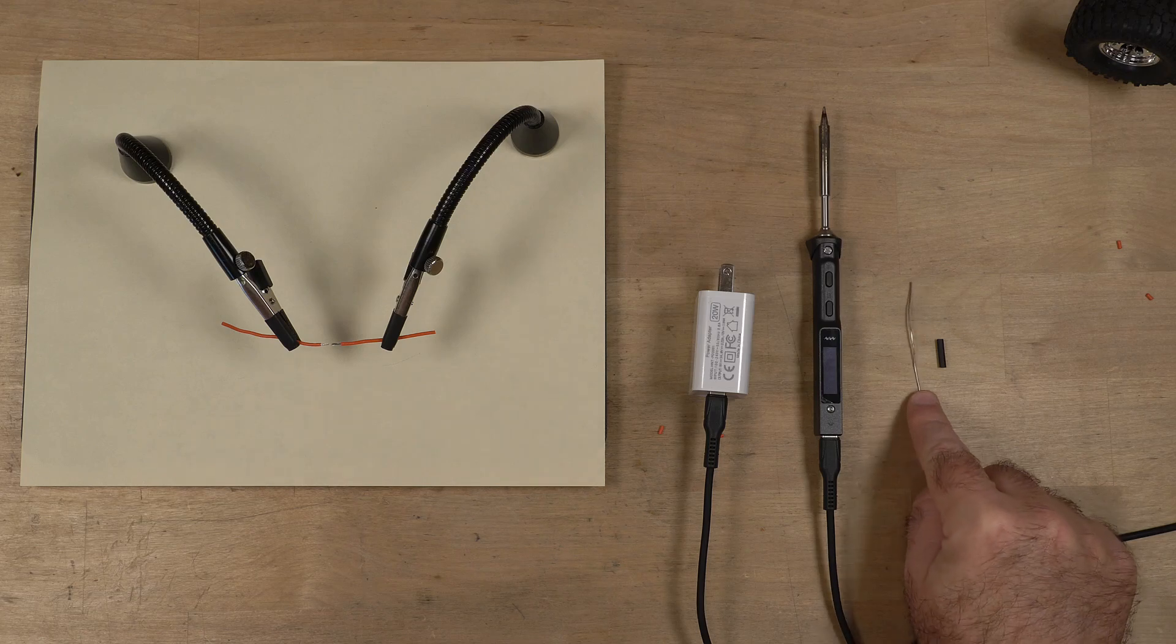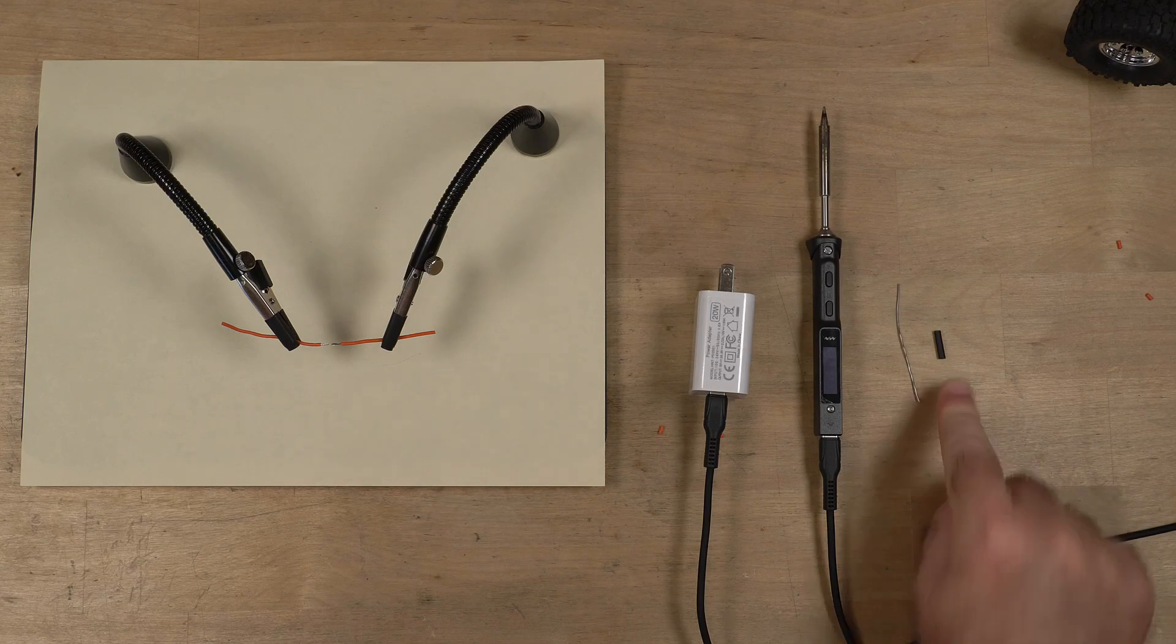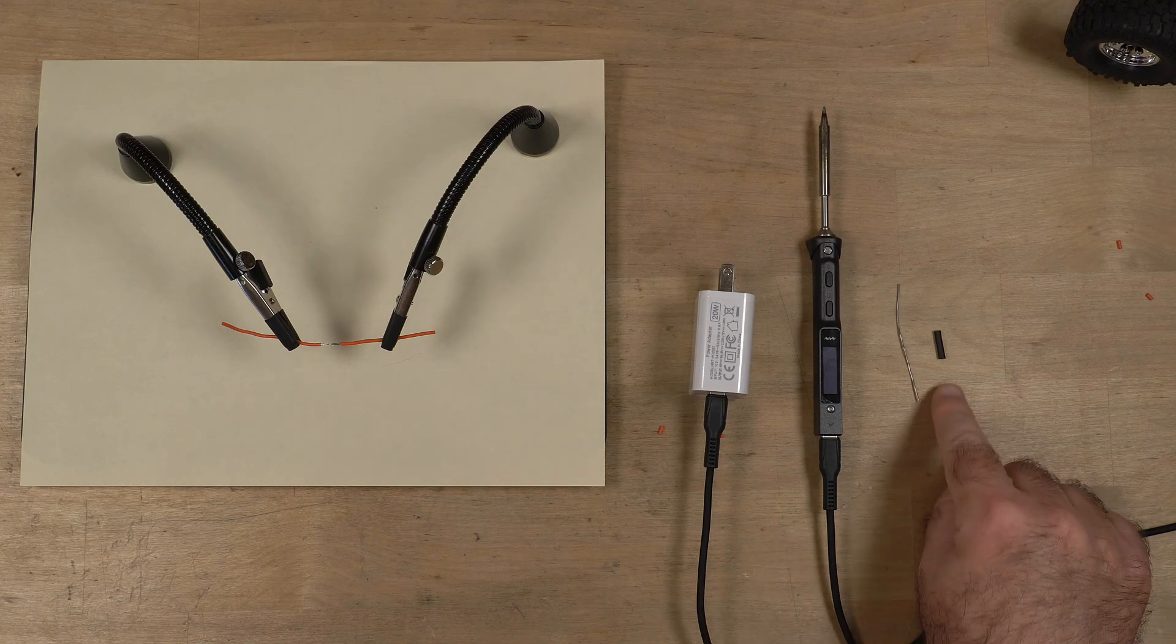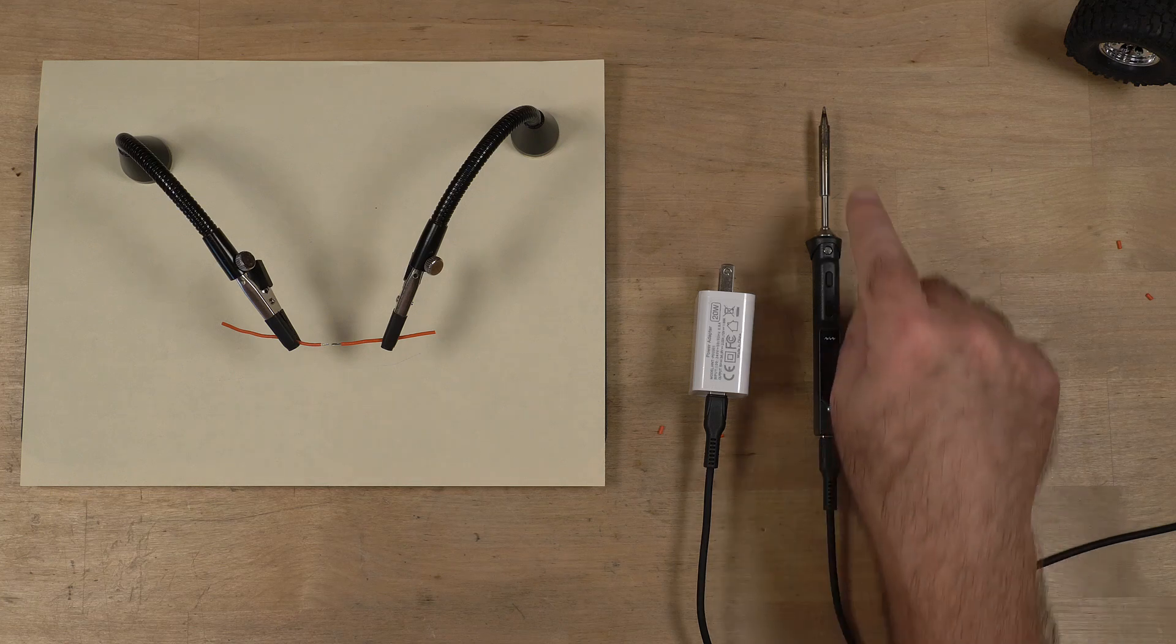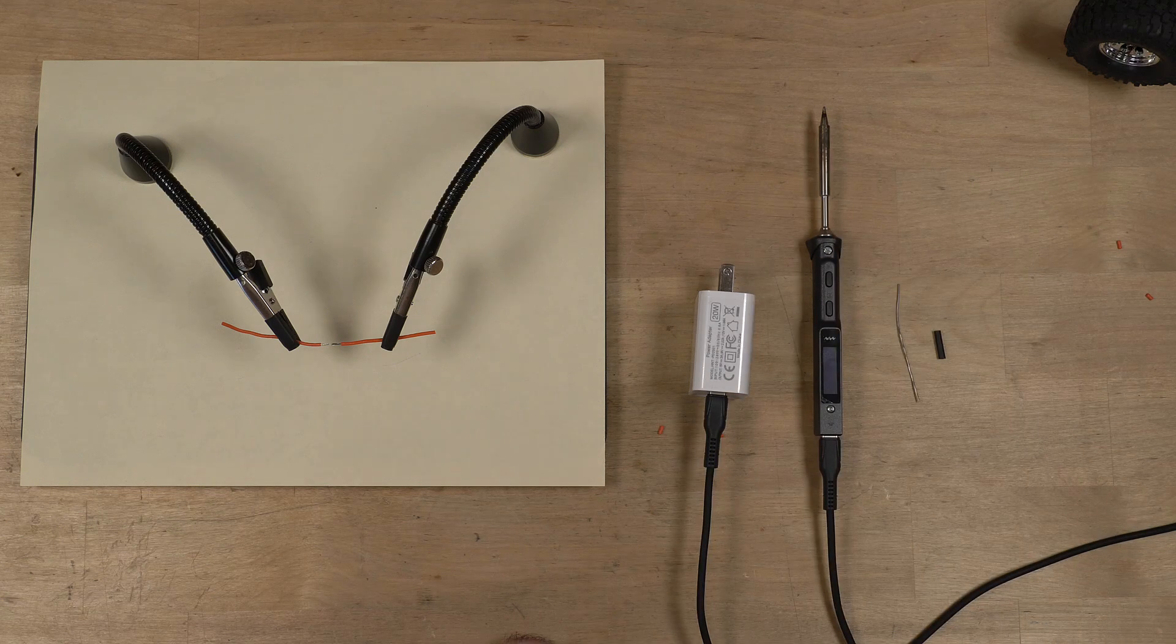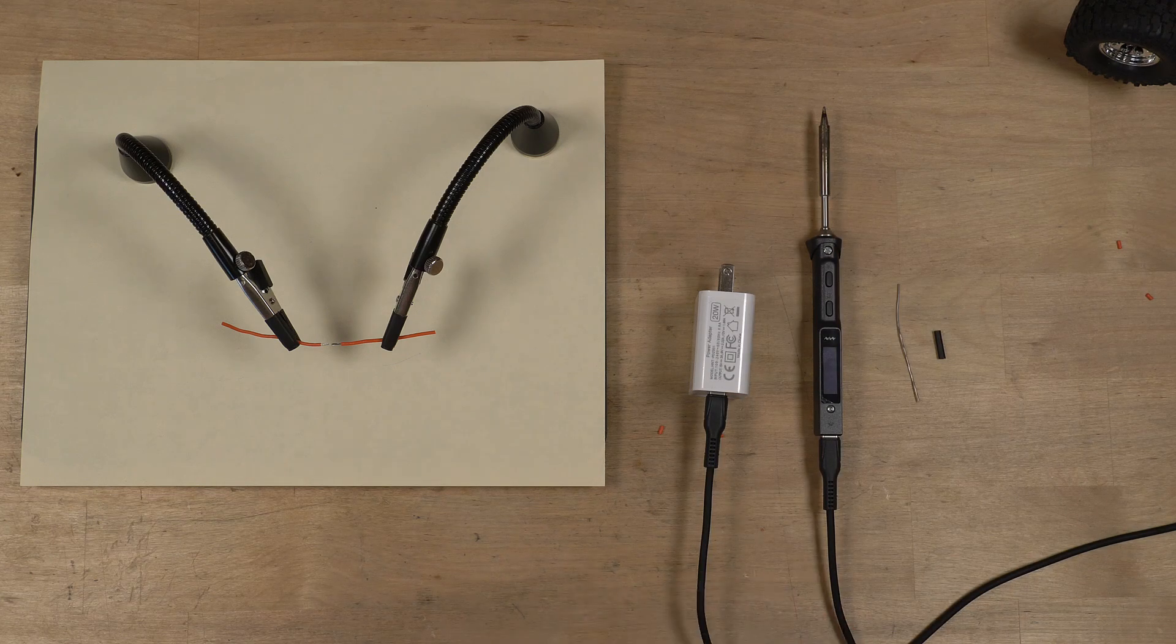You're going to need some solder and you're going to need some shrink tubing. You'll also need some way of melting that. You can either use the edge of the soldering iron to do that, a lighter, what-have-you.